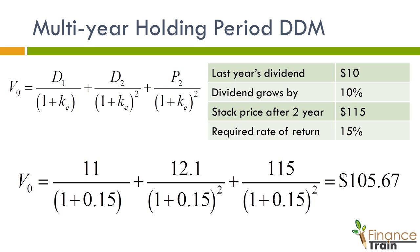One problem with the dividend discount model is that it cannot be used to value stocks that don't pay dividends. In such cases, analysts use free cash flow to equity instead of dividends to calculate the present value.